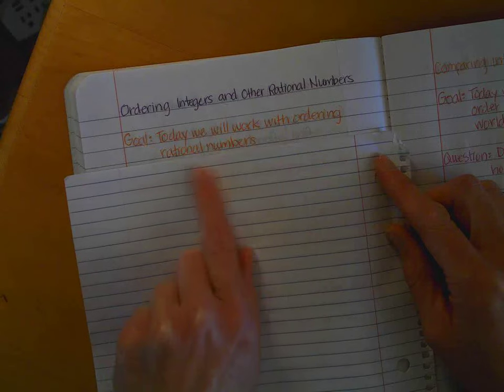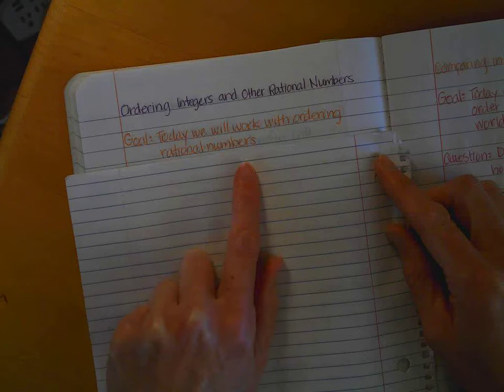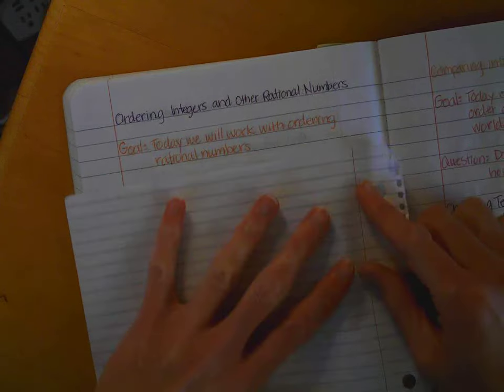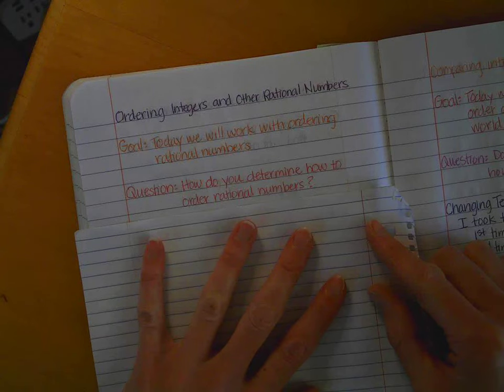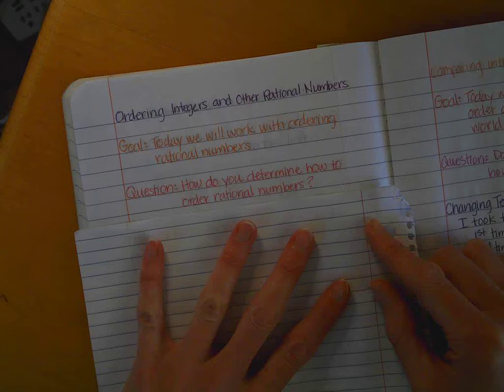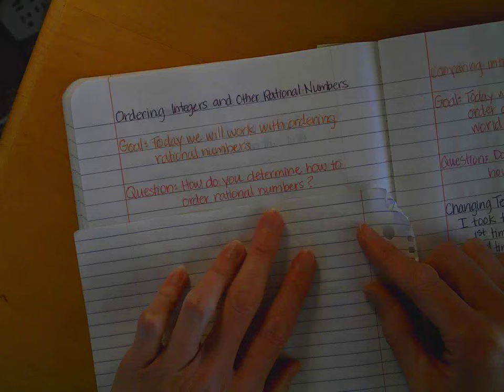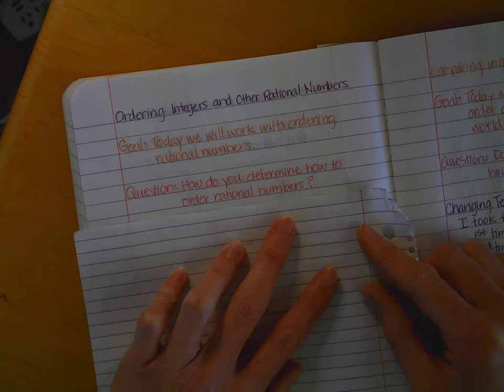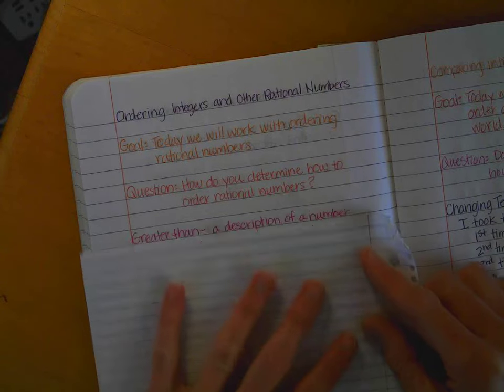So today, we will work with ordering rational numbers, and we learned what rational numbers are yesterday, so that's ordering a lot of different types of numbers. It can get tricky. Hopefully, it will be fun. Question, how do you determine how to order the rational numbers? And some of you are going to say, well, you have to read the directions, and it says order them from the least to the greatest, greatest to least. You are correct.